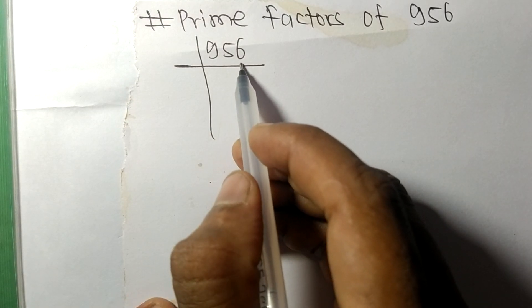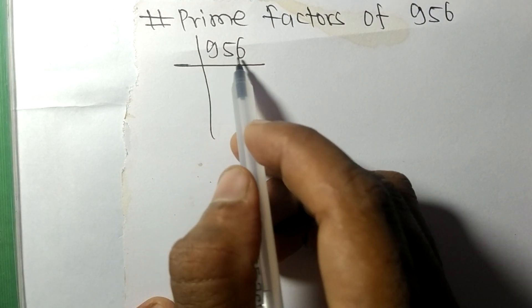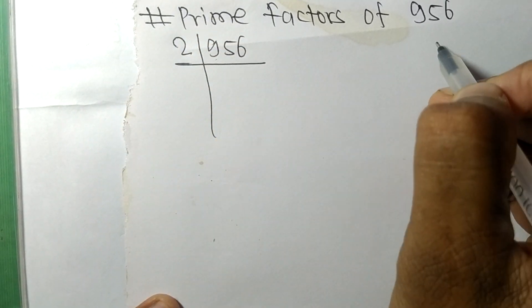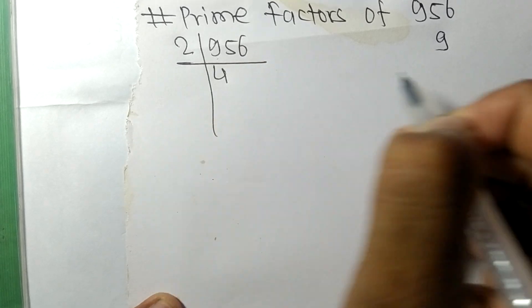First we have 9, so 2 times 4 means 8. On subtracting we get 1.